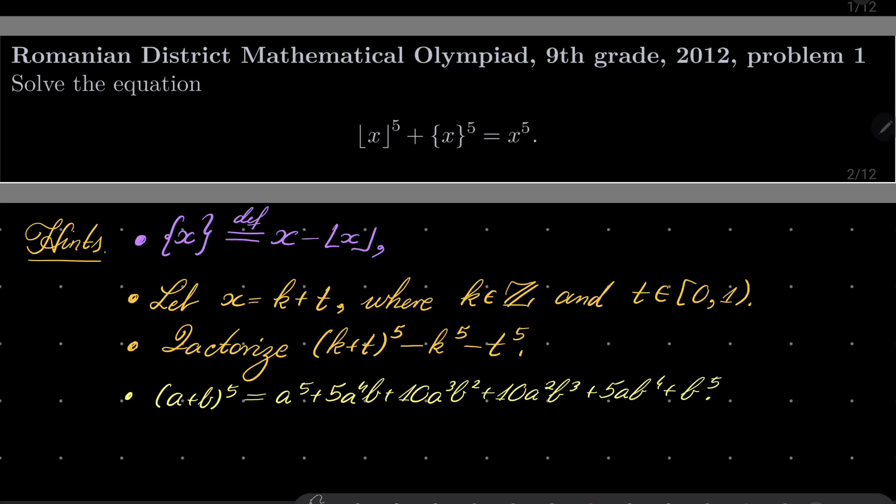First, fractional part, if you don't know, is defined as x minus floor of x, and every number can be written as some integer plus some fractional part, where k is an integer and the fractional part is always between 0 closed and 1 open.